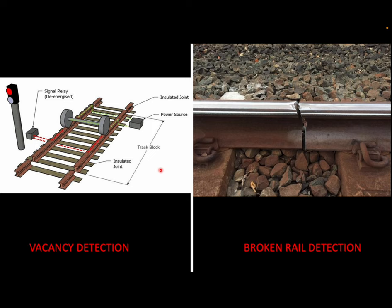On top of that, another thing these track circuits can do is broken rail detection. If the rail is broken, that broken rail will disrupt the circuit — because of the broken rail, the circuit will not be complete. And because the circuit is not complete, the relay will be de-energized. Because the relay is de-energized, the central computer will think that the section of track is occupied, and if it's occupied, it will not let another train enter that section, thereby making the whole system safe.